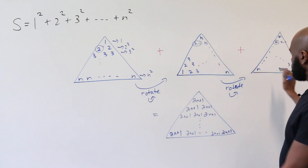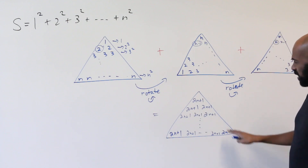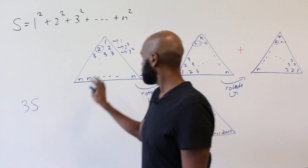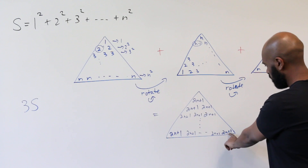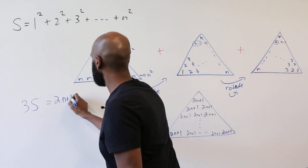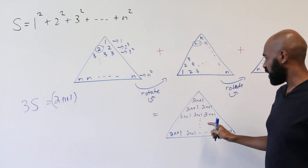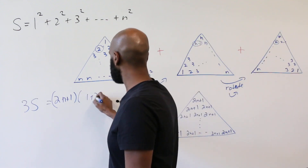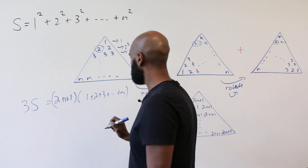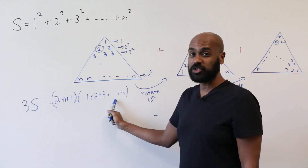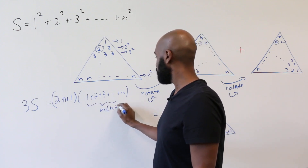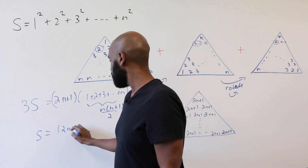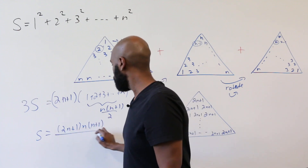So 3 times S equals 2N plus 1 times the number of entries in the triangular array. That count is 1 plus 2 plus 3 up to N, which is N times N plus 1 over 2 — the formula we found earlier. Rearranging, our sum S equals 2N plus 1 times N times N plus 1, all over 6. That's a complete pictorial proof for the sum of the first N squares.